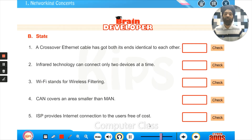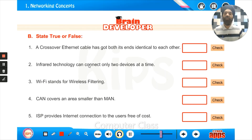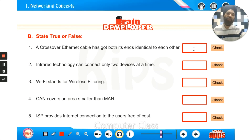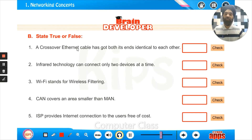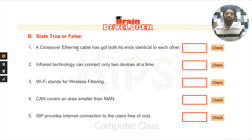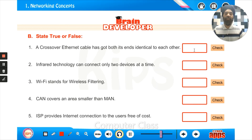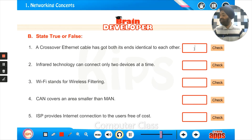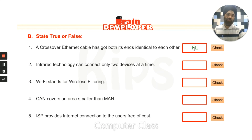Now we have true/false questions. First: a crossover Ethernet cable has both its ends identical to each other. We must remember that a crossover cable is used whenever you have to connect one device with another, and both ends are not identical to each other. So the answer is false.